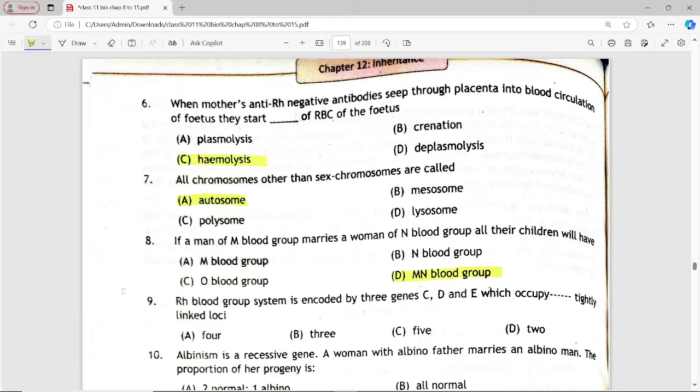Next is: RH blood group system is coded by 3 genes C, D, and E which occupy [blank] loci. Options are: 4, 3, 5, 2. Answer is option B, 3.